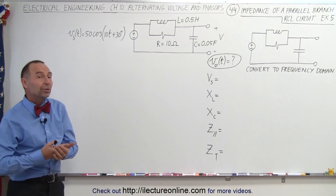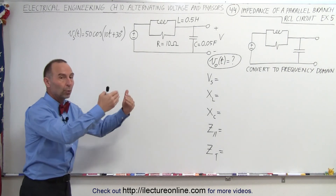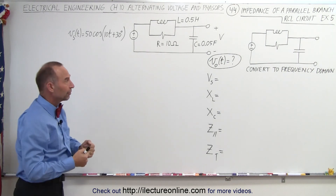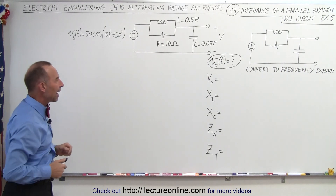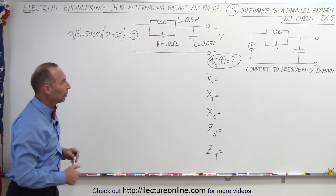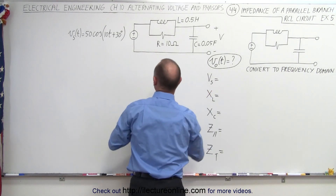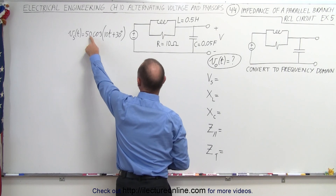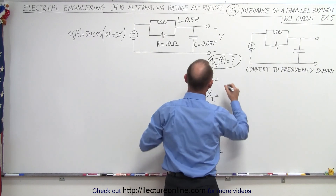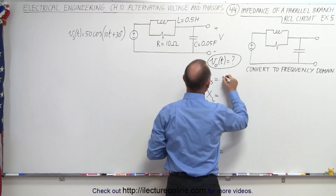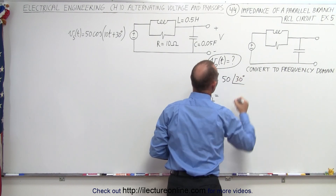The idea is to convert everything into the frequency domain, work out the problem for the voltage output, and then convert back into the time domain. For the voltage of the source, we take the maximum voltage and the phase angle, so this becomes 50 with a phase angle of positive 30 degrees.